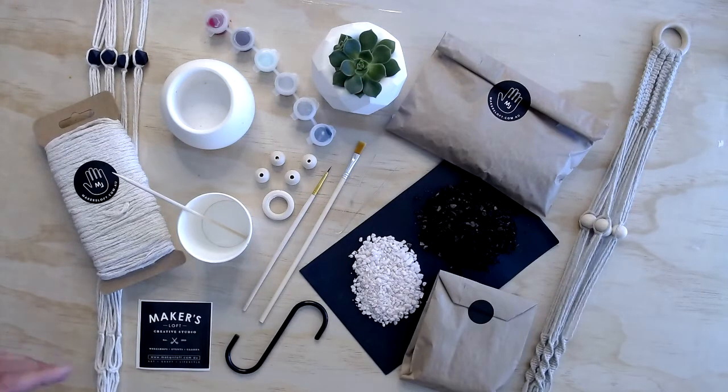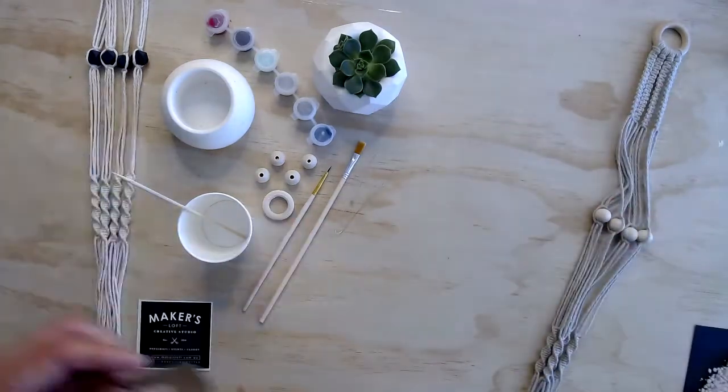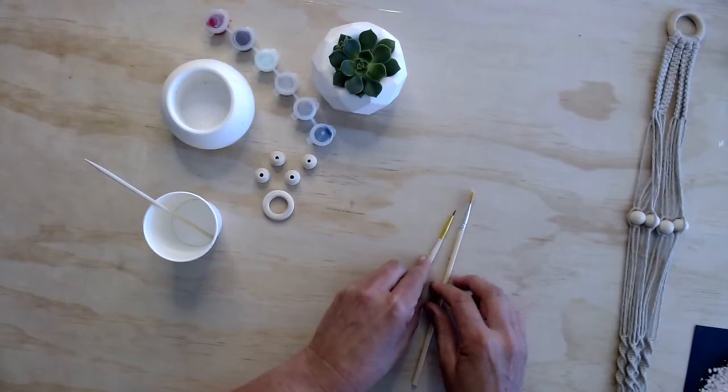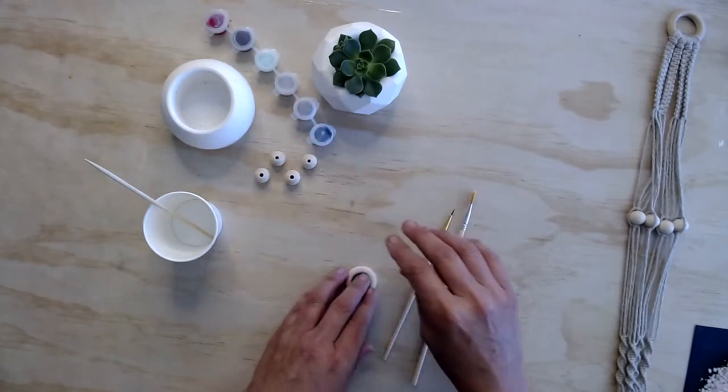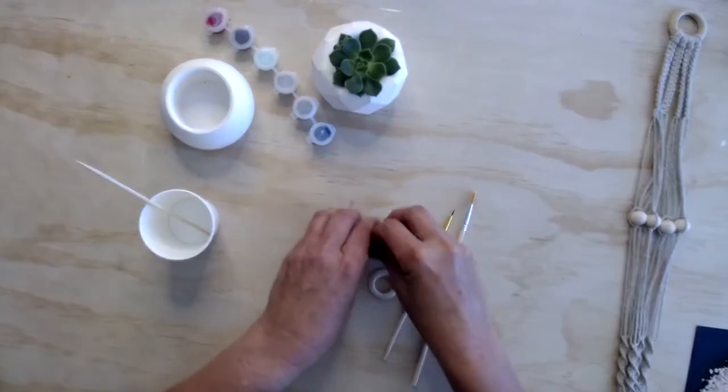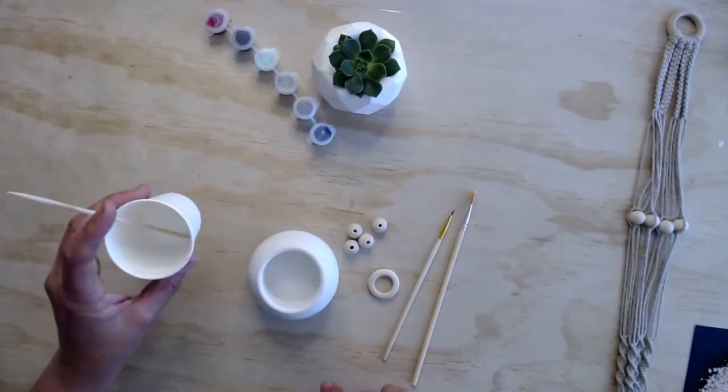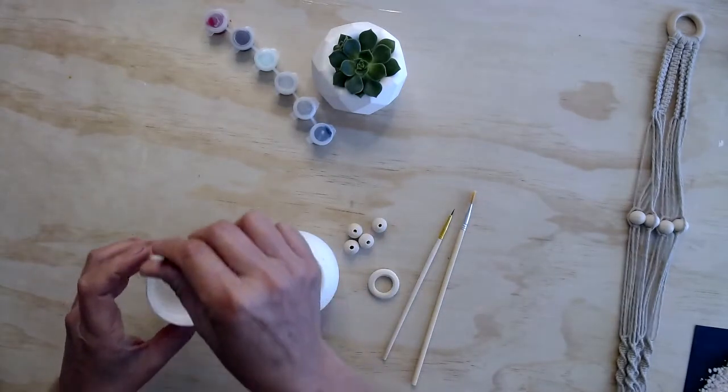We're going to start with painting our beads and our little pot. Everything you don't need for that we'll put to the side. So what you'll need is your paint brushes, your wooden ring, your beads and your little pot, your paper cup and your skewer.